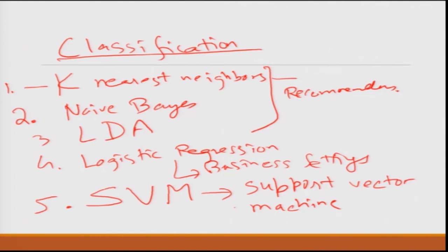What you need to understand more than the mathematics is the various usages of these methods — where and when each one should be applied. From a practitioner standpoint they will be just one or two lines of code. What is important is putting the data in very carefully and knowing which are the right problems for each. K-nearest neighbor is good if you have three or four dimensions — not more — because with more dimensions the neighbors become too far apart.